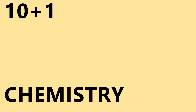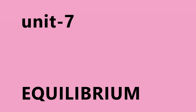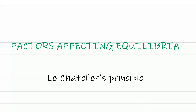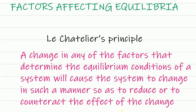Welcome to 10+1 Chemistry. Today's topic is from Unit 7 Equilibrium — 'Factors Affecting Equilibrium'. This is a very important topic. Le Chatelier's Principle states that a change in any of the factors that determine the equilibrium conditions of a system will cause the system to change in such a manner so as to reduce or counteract the effect of the change. This principle is very helpful in predicting qualitatively the effect of change in concentration, pressure, or temperature on a system in equilibrium.